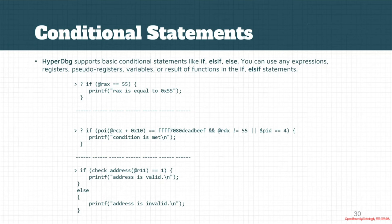You can also use expressions in the if statements or conditional statements. For example, in the second example, I made a simple script that adds 0x10 to RX and then dereferences it, and we check whether it's equal to a certain value or not. If it was equal, then we have a second check, and we can use these operators to check with different conditions.